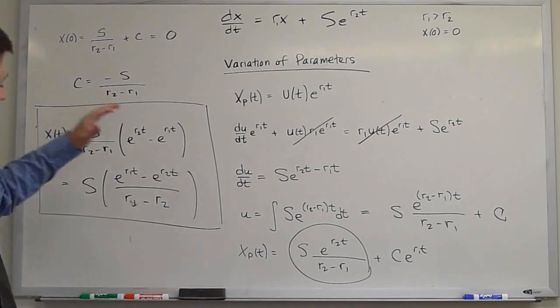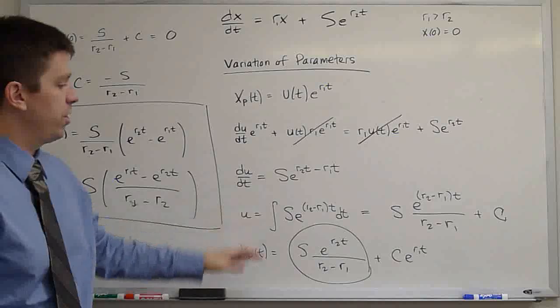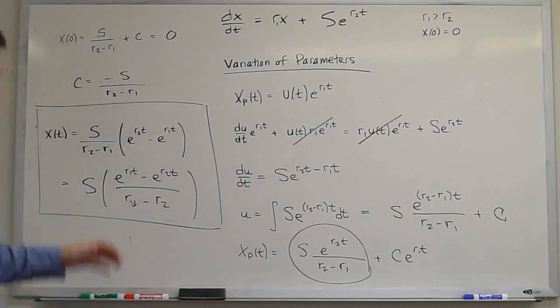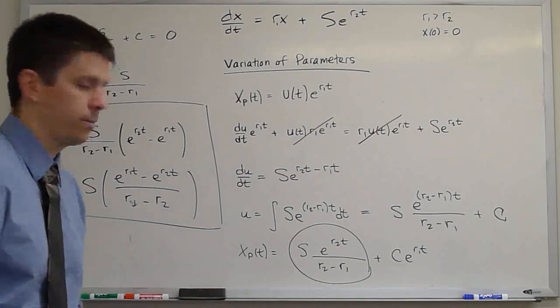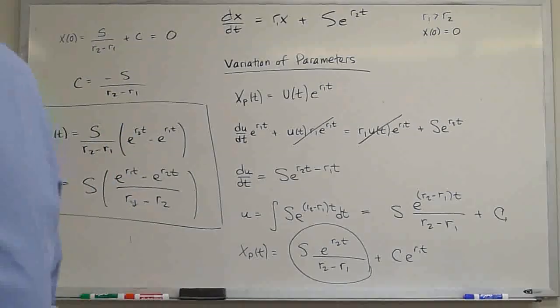So homogeneous separation to solve the homogeneous equation, variation of parameters to solve the particular solution, and we obtain a general solution satisfying the initial condition. Thank you. That is it.